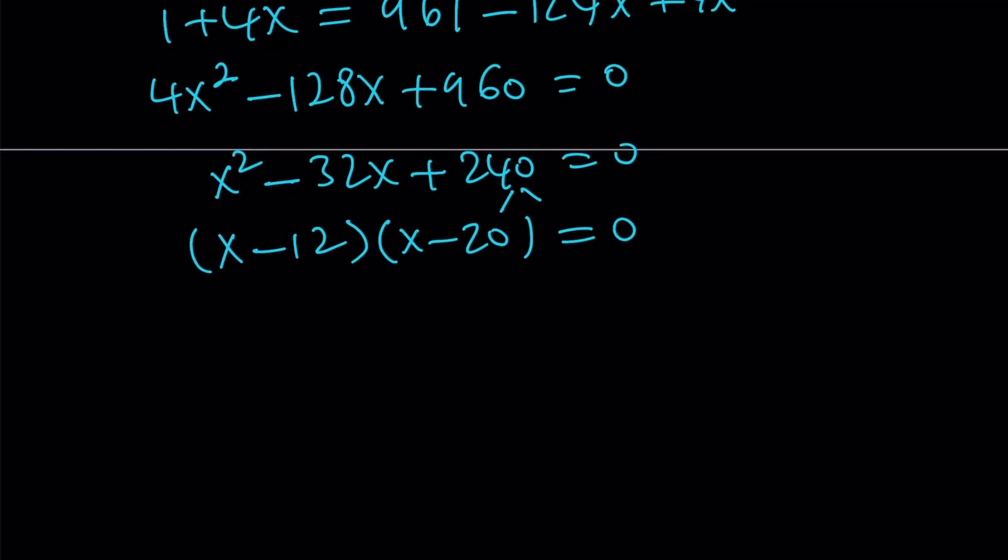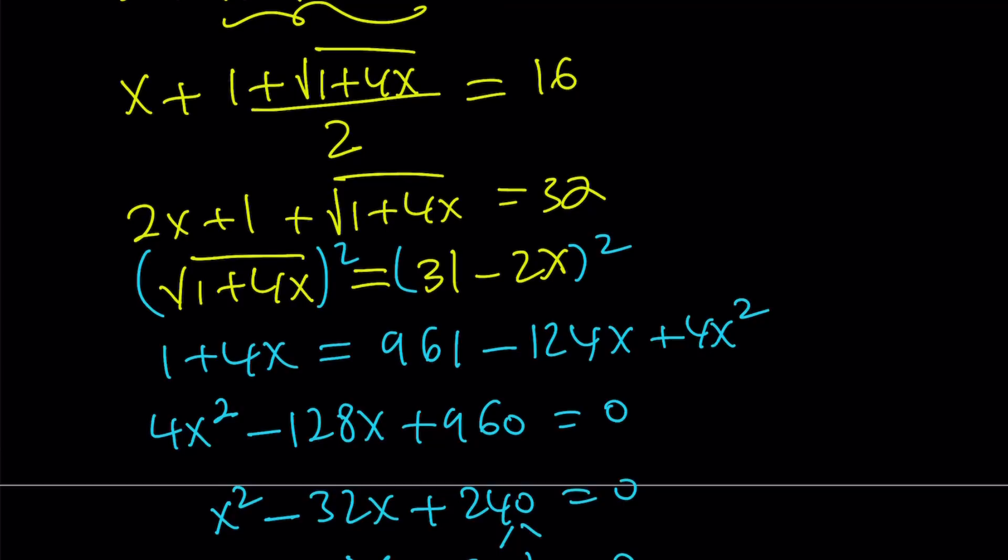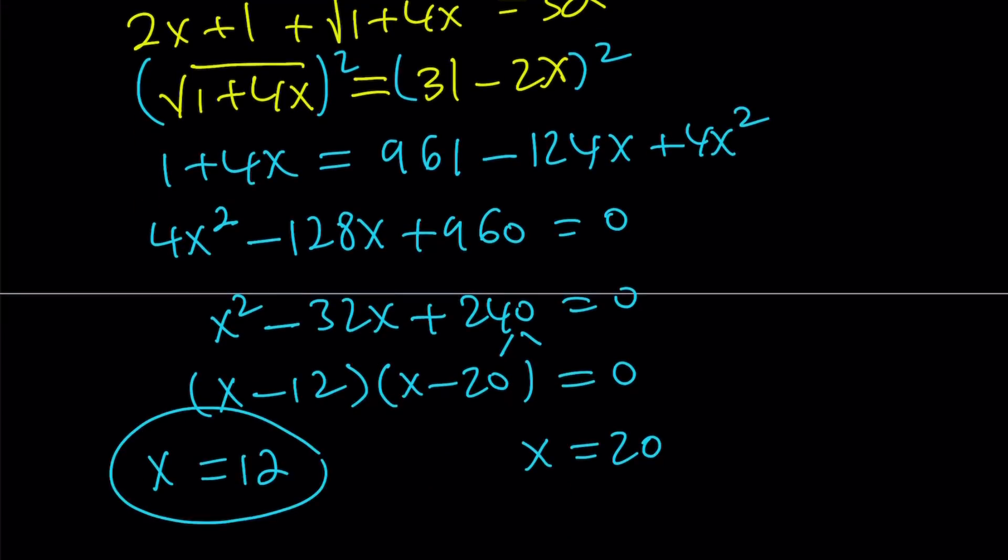From here, we get two solutions. I'm going to talk about why we get two solutions. Obviously, one of them is not going to work because we're looking for a certain numerical value. So x equals 12 and x equals 20. If you go back and substitute 12 into this equation, you're going to notice that 4 times 12 is 48, square root of 49 is 7, 7 plus 1 is 8, 8 divided by 2 equals 4, 12 plus 4 equals 16. So x equals 12 works.